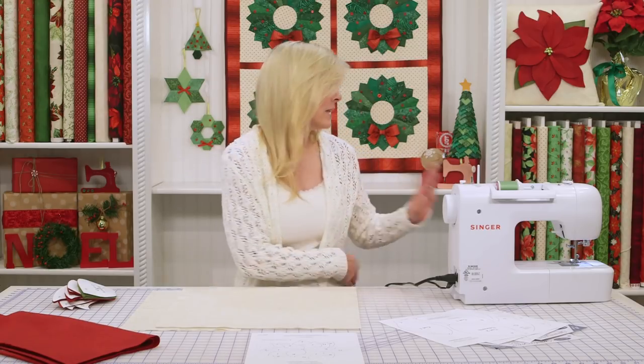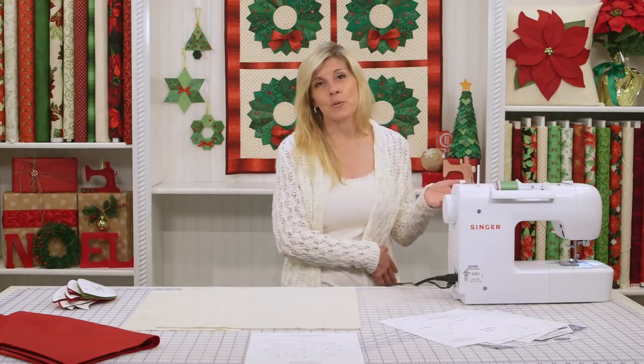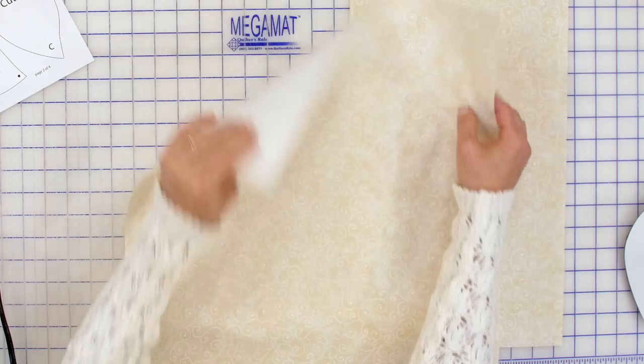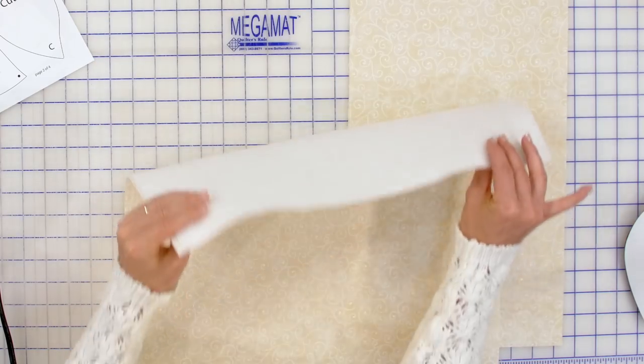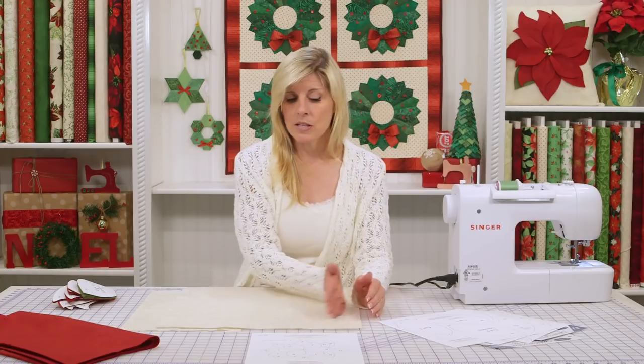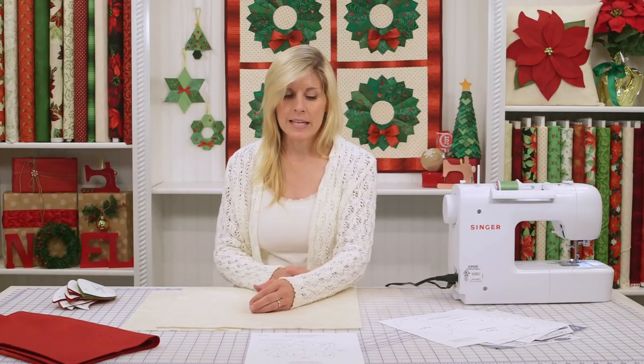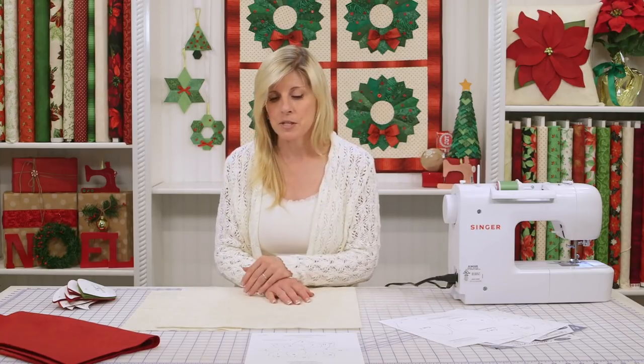But the first thing that we did with our pillow is we wanted it to be pre-quilted. So we got a piece of fabric, 17 inches. We chose a fusible batting and ironed it to the back, and we just drew a grid on there and just did some straight stitches along those lines. And it has a really nice quilted look, so that's a great option.